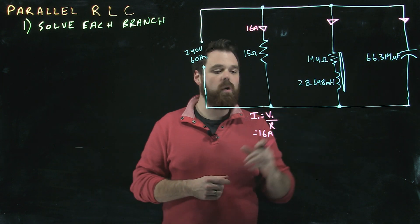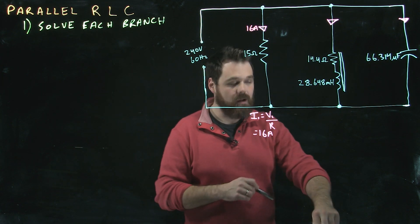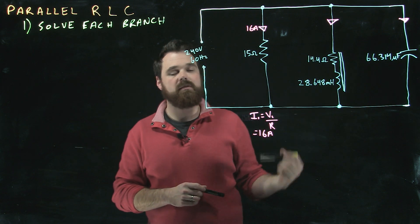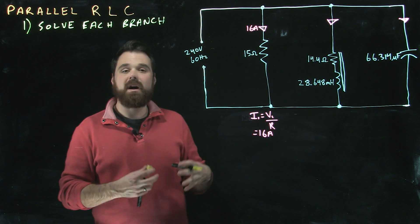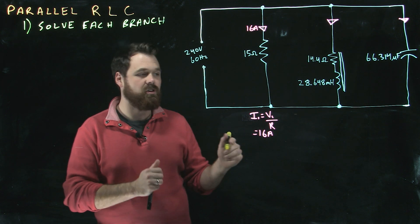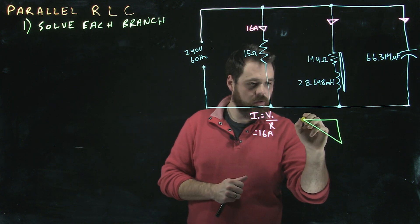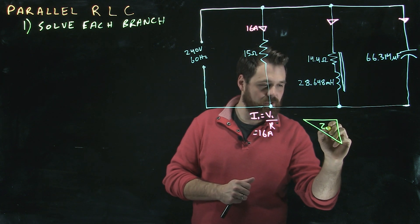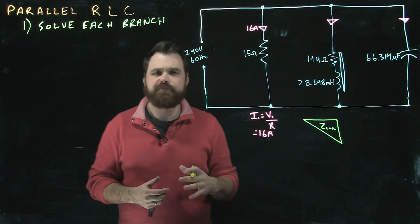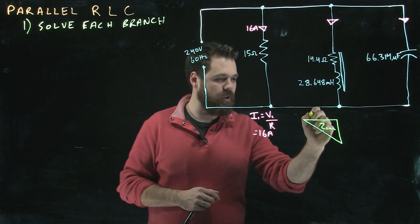When I move into this coil, it gets more complicated because I have that resistive component as well as the inductive component. So what we have to do for our coil in this circuit is we actually have to create Z of the coil, a little triangle. We have to put our resistive component here.